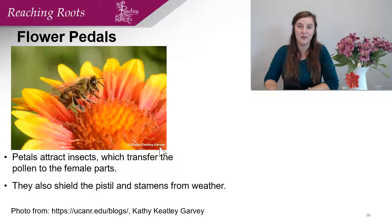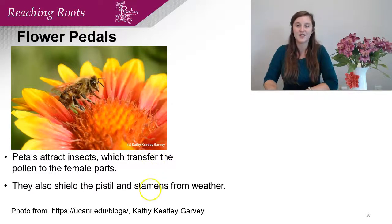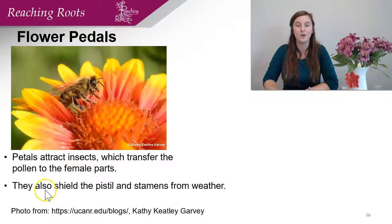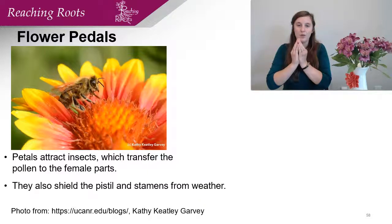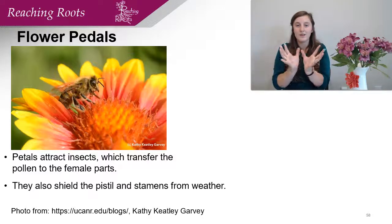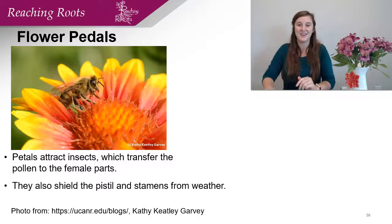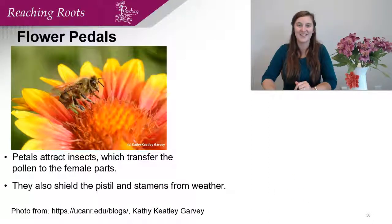Flower petals are very important for plants being successful in their reproduction. Petals attract insects which transfer pollen to the female parts. They also shield the pistil and stamens from weather. Before the flower opens, the petals provide protection for those immature flower parts while they develop. Then once they open, those beautiful petals attract pollinators. Petals are not only gorgeous but they're very important biologically.